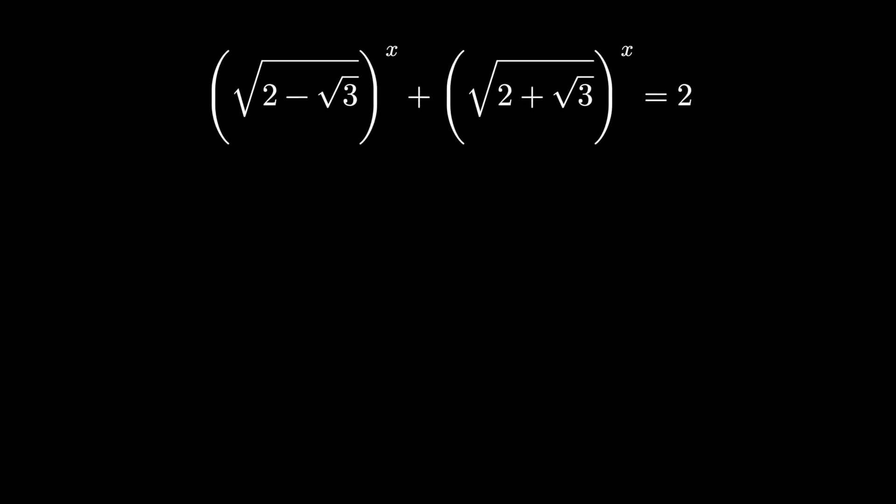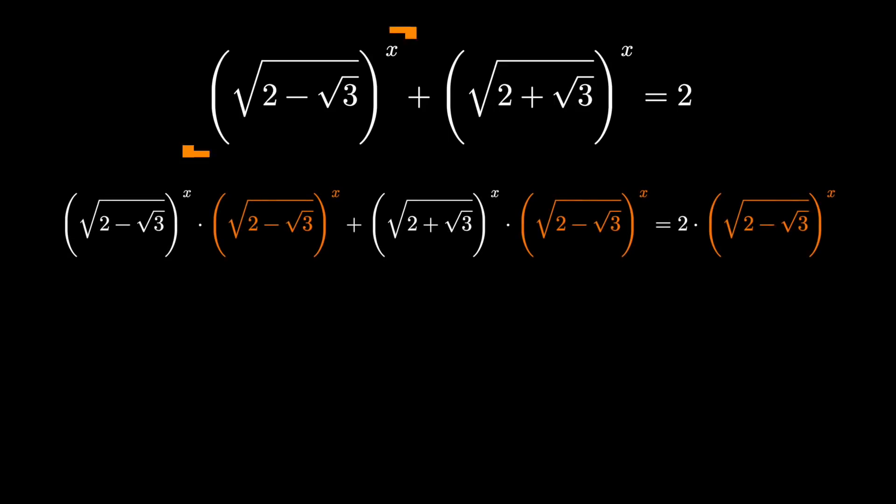If you're feeling slick you can probably find the solution to this equation just by inspection but let's be a little more thorough than that. Multiply both sides by that quantity root 2 minus root 3 all to the x.